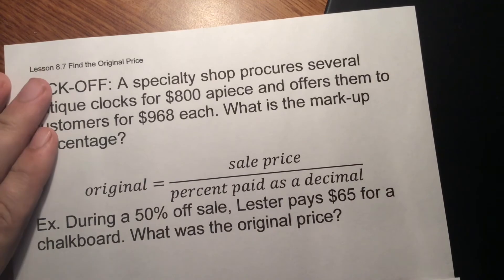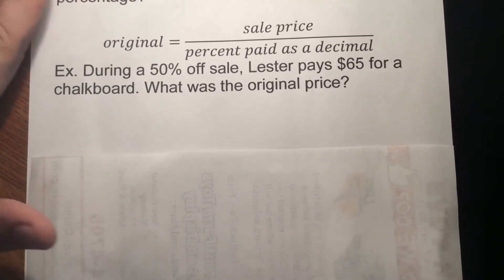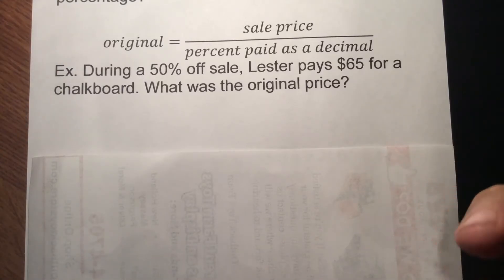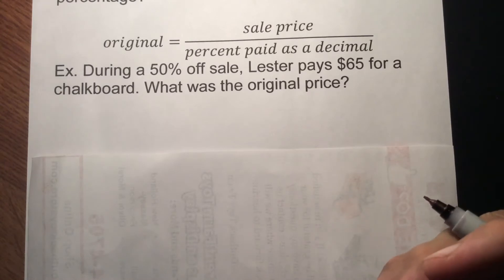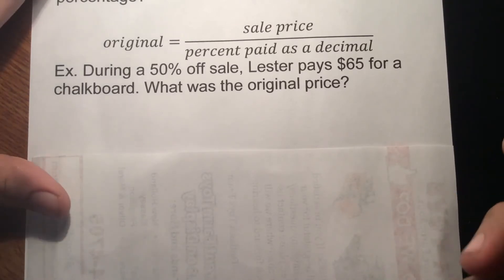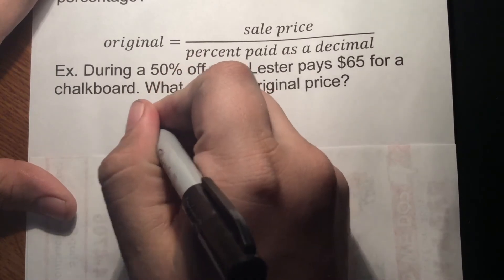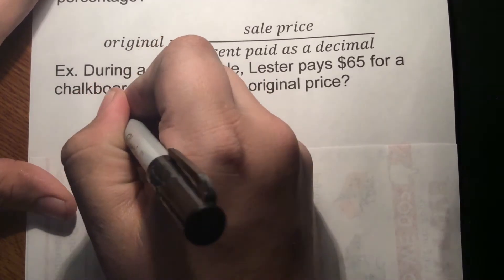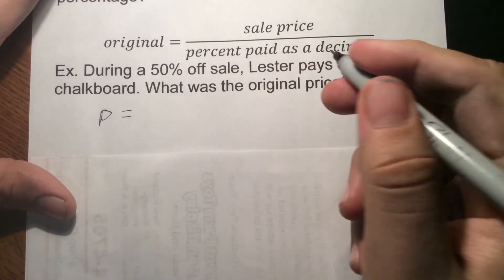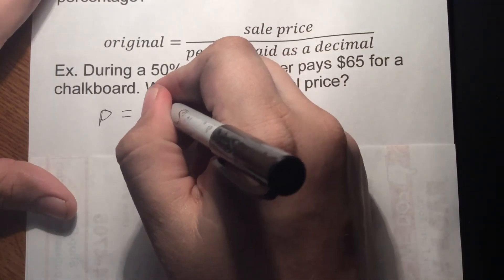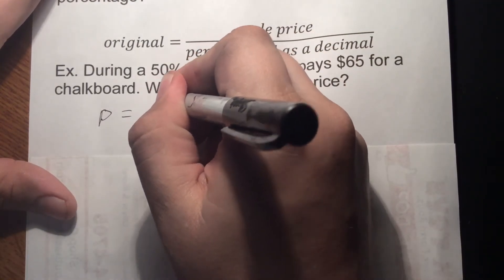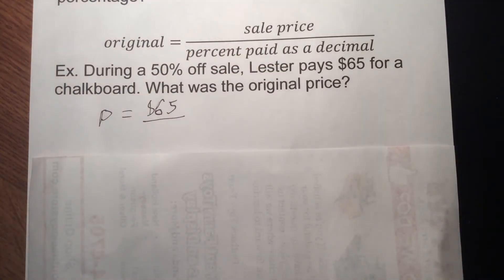So if we do this first one here: during a 50% sale, Lester pays $65 for a chalkboard. What was that original price? Well, we have to look at — if it's 50% off, what percent did we actually pay for? Well, the other 50%. So when we set this up, our price P is going to be equal to our sales price, which was $65, divided by our percentage as a decimal.